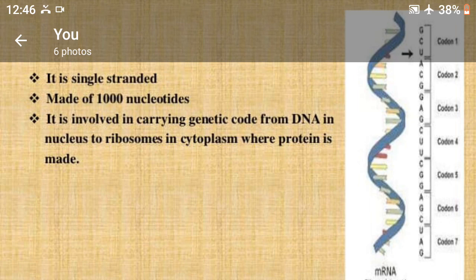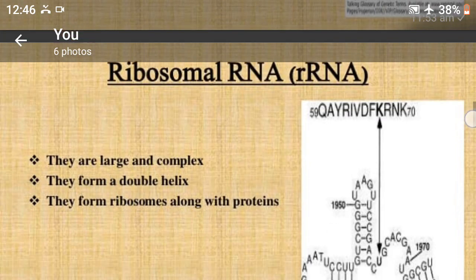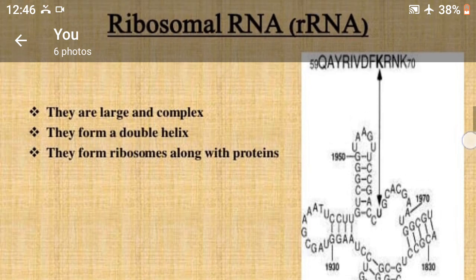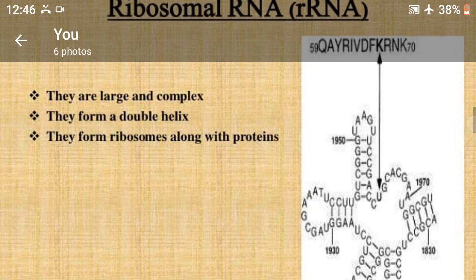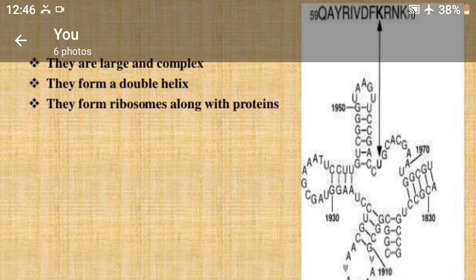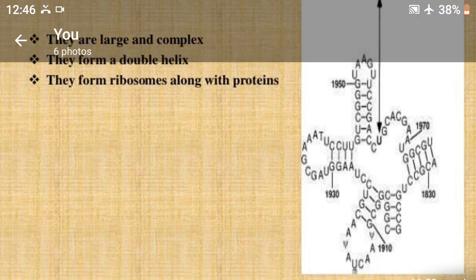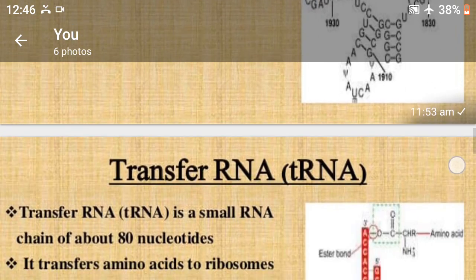Second, ribosomal RNA. They are large and complex structures of RNA and they form double helical structures. They form ribosomes along with proteins — ribosomal RNA.